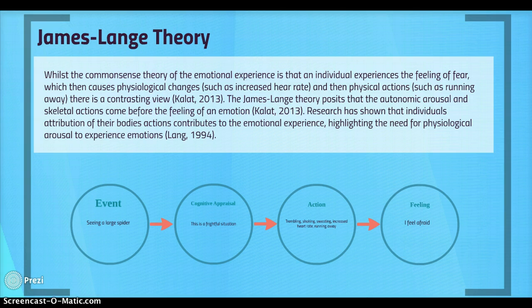The James-Lange theory is illustrated such that an event — such as seeing a large spider — will lead to the cognitive appraisal that this is a frightful situation, followed by actions including trembling, shaking, sweating, increased heart rate, or running away, and then the feeling 'I feel afraid.'